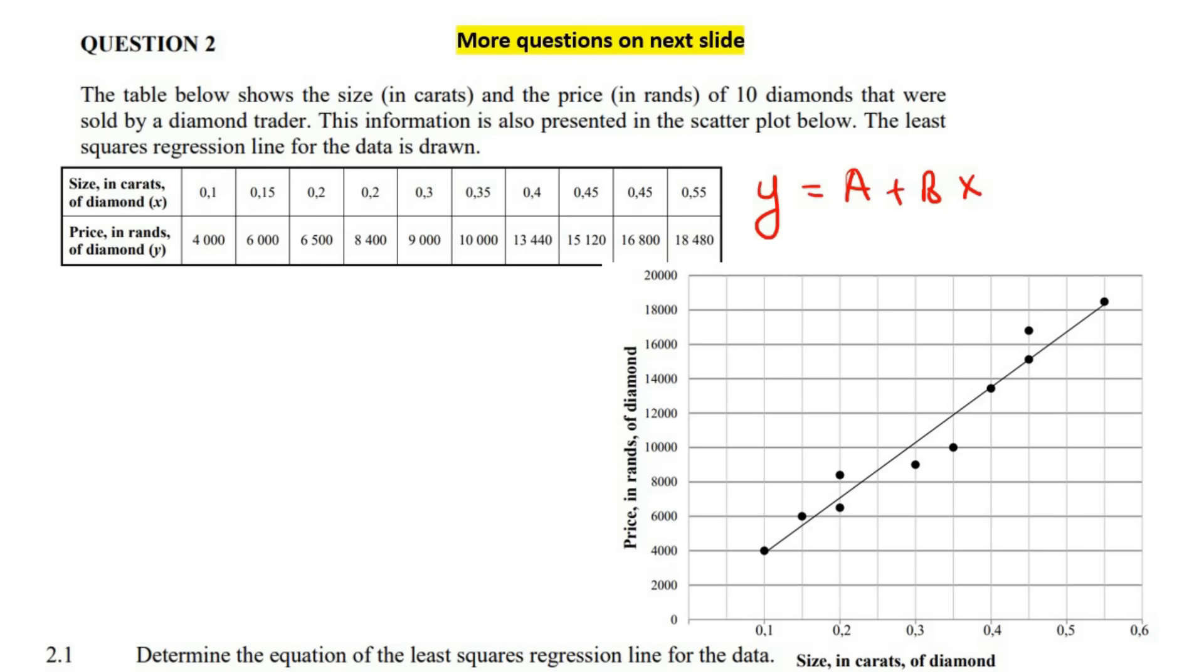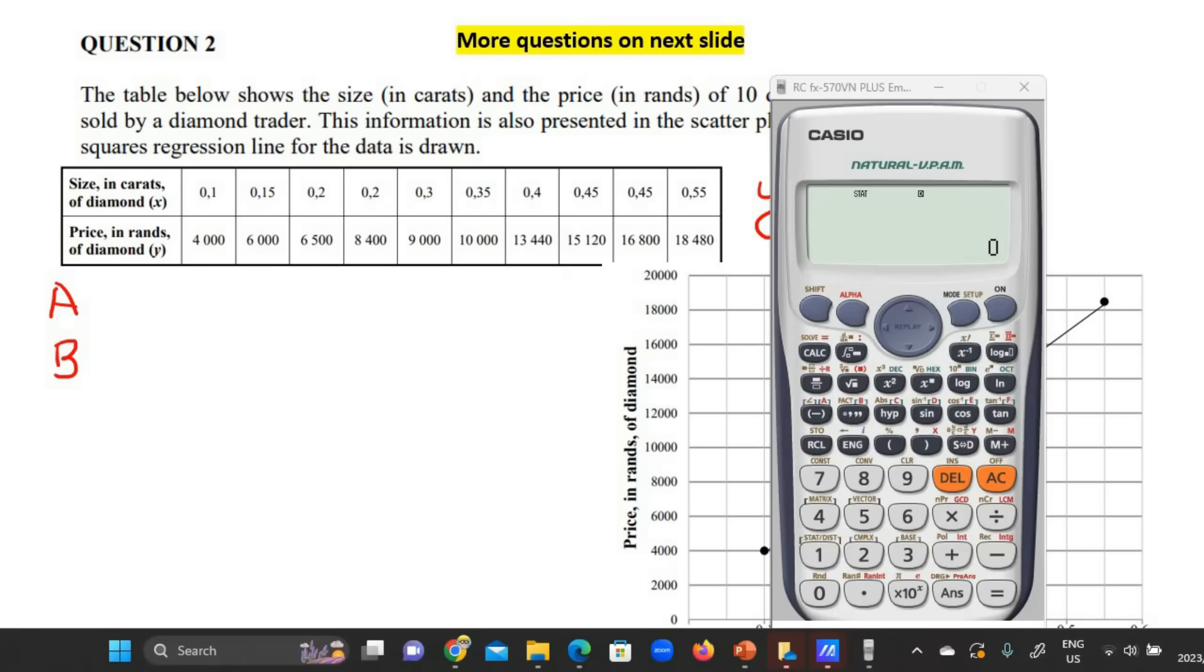Once you've entered all those values, you need to tell your calculator: hey calculator, I need you to give me the A value and the B value. You push the ON button - it doesn't take you away from the screen where you were entering all the values. I've entered all the values already. Now we need to tell the calculator we need the A value and the B value. You press the shift button, then one, and then you're going to not press number four - that would only be if we were busy with grade 11 statistics - but rather number five, which is regression. Push number five and there's the important parameters you may be asked to find. To find A, you're going to press number one and then equals.